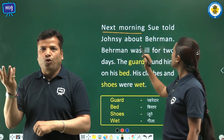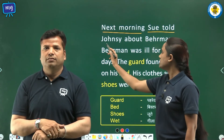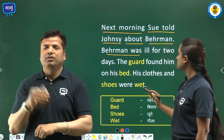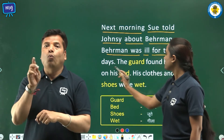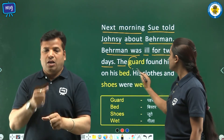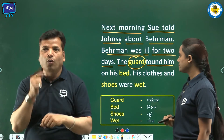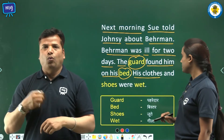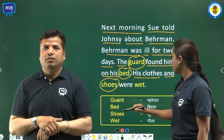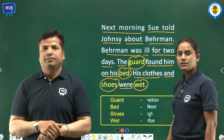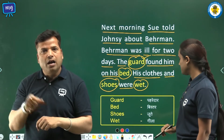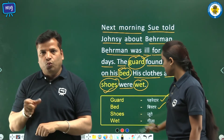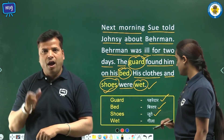Next morning, Sue told Johnsy about Behrman. Behrman was ill for two days. The guard found him on his bed. His clothes and shoes were wet. Word meanings: guard — pehredar, bed — bistar, shoes — joote, wet — gila.